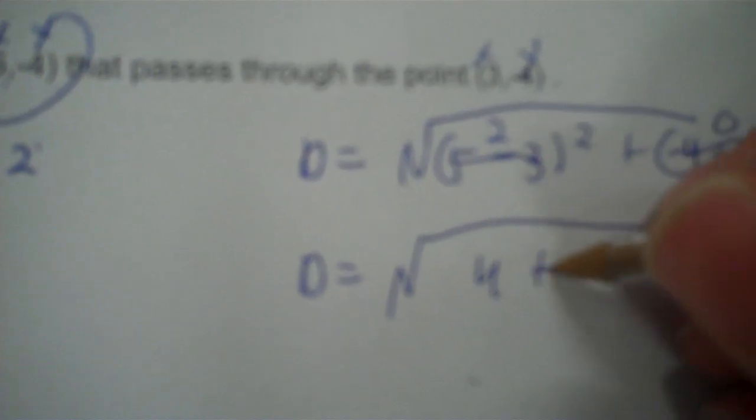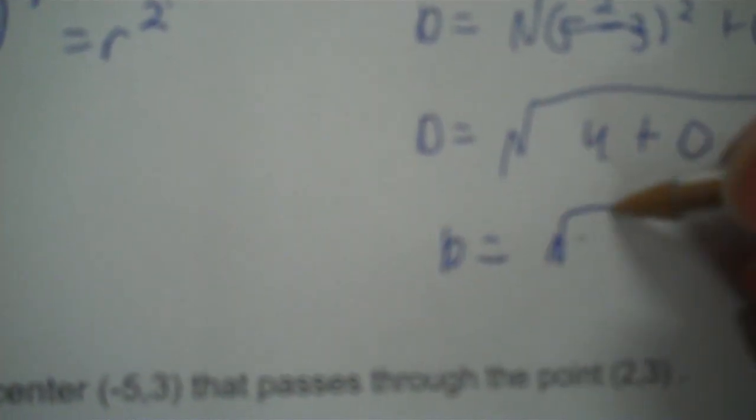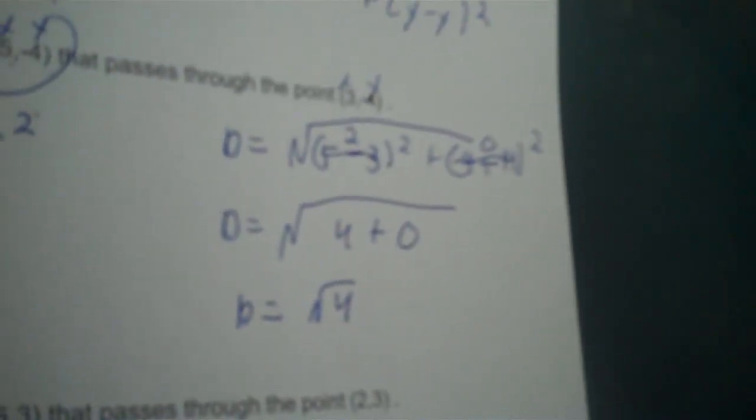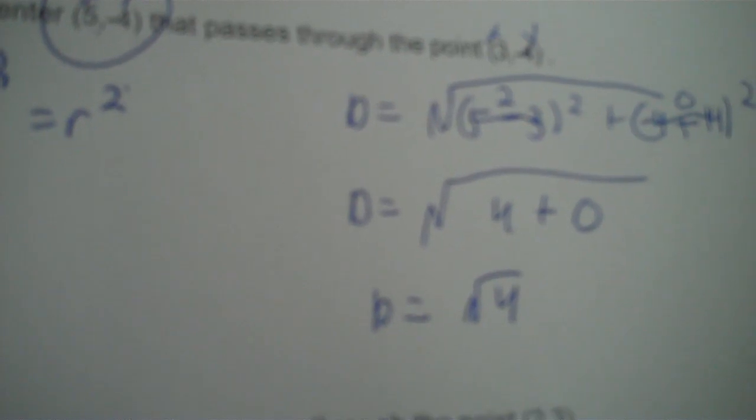Negative 4 plus 4 is 0. So, 2 squared is 2 times 2, and that's 4. 0 squared is 0 times 0, and that's 0. So 4 plus 0 — d equals the square root of 4. The radius would be 2.